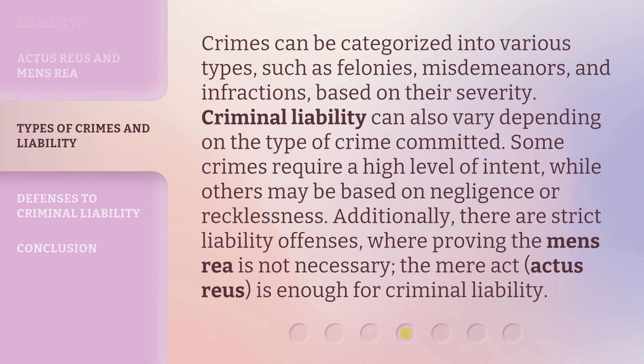Crimes can be categorized into various types, such as felonies, misdemeanors, and infractions, based on their severity. Criminal liability can also vary depending on the type of crime committed. Some crimes require a high level of intent, while others may be based on negligence or recklessness. Additionally, there are strict liability offenses, where proving the mens rea is not necessary — the mere act, the actus reus, is enough for criminal liability.